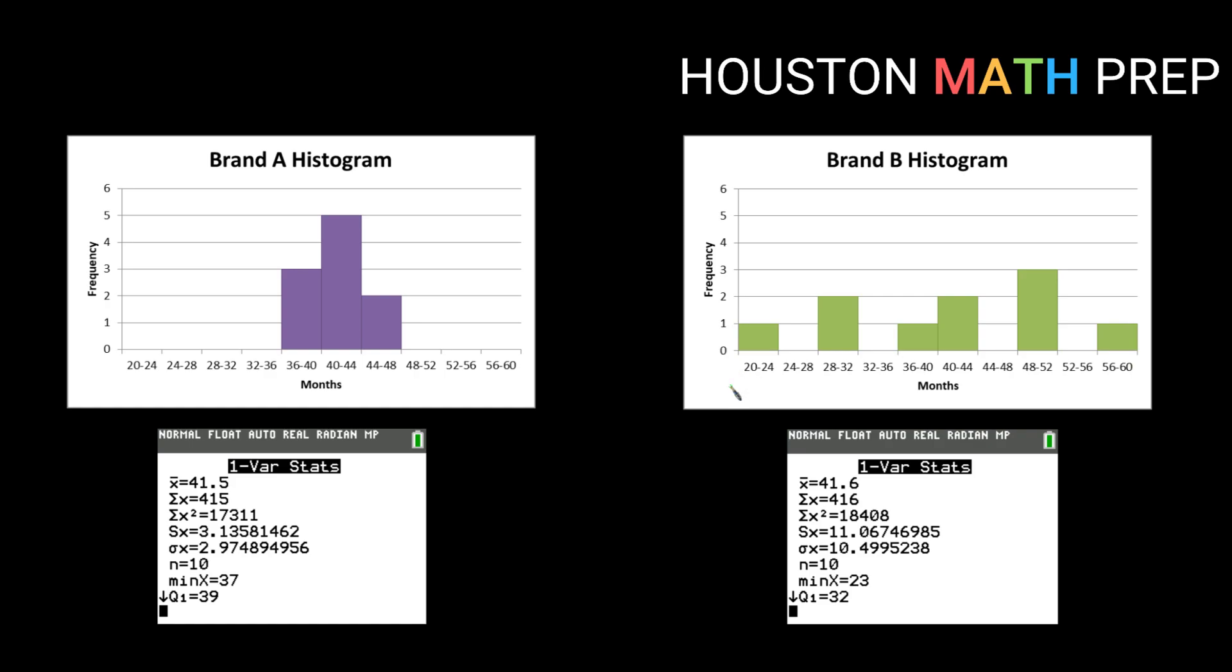We can see a numerical measure of that phenomenon by checking out the standard deviation. So if I look at a one variable statistics readout for each one I can see that my sample standard deviation for brand A is 3.13 months. So that means that brand A has an average lifespan of about 41.5 months and give or take three months either way. So that seems like a pretty consistent brand.